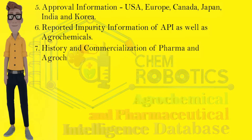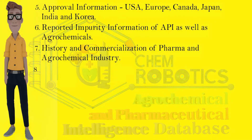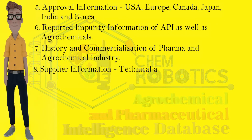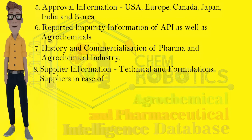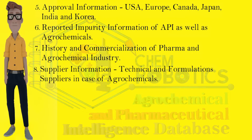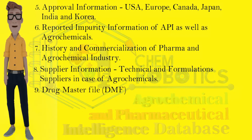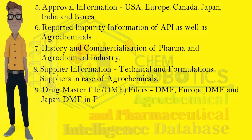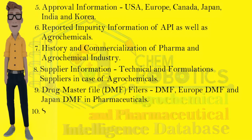Sixth, reported impurity information of API as well as agrochemicals. Seventh, history and commercialization of pharma and agrochemical industry. Eighth, supplier information — technical and formulation suppliers in the case of agrochemicals. Ninth, drug master file filers — US DMF, Europe DMF, and Japan DMF in pharmaceuticals.